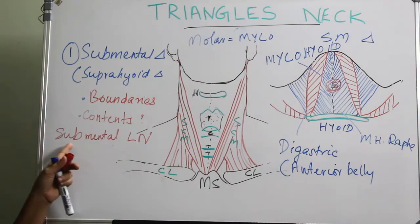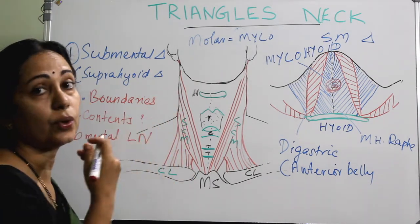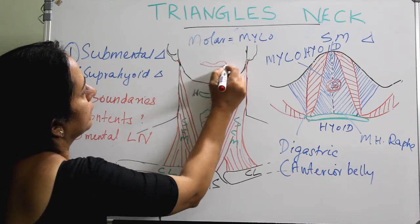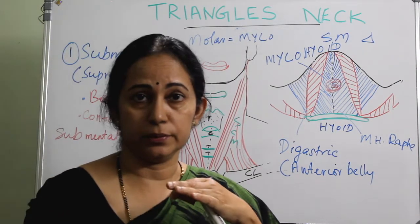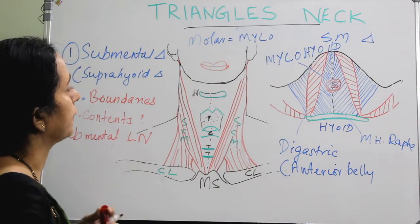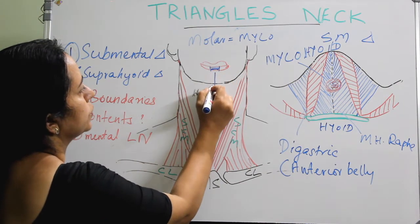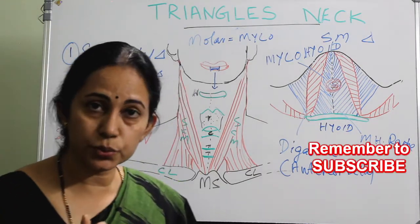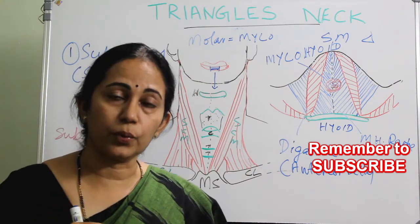The submental lymph node drains the floor of the mouth, the central area of the lower lip, and the apex of the tongue. These all drain into the submental lymph node.